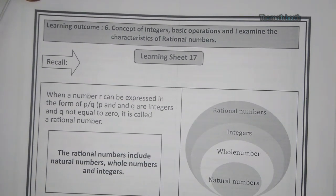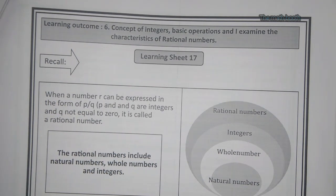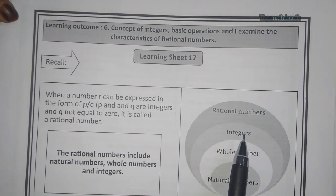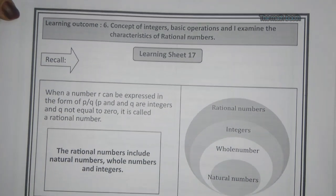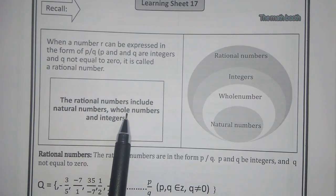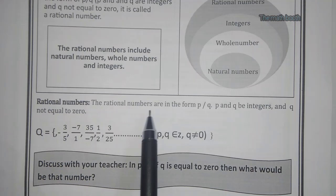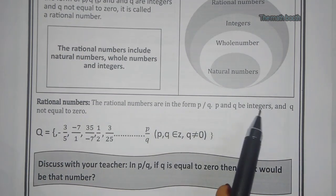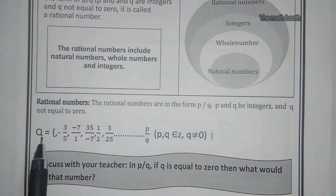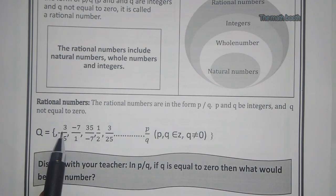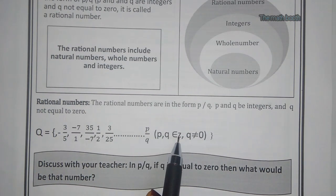Let us recall the definition of rational numbers. Rational numbers are in the form of p by q, where p and q are any integers and q should not be equal to 0. In symbolic form, any fraction-form number with a positive or negative sign where p and q belong to Z, that is integers, and q is not equal to 0.